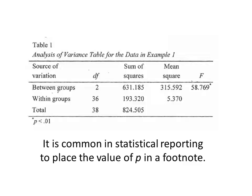The sum of squares and mean squares are intermediate values obtained in the calculation of F. If you divide the mean square of 315.592 by the mean square of 5.370, you will obtain the F value. For most people, the values of sum of squares and mean squares are of very little interest; the typical consumer is really interested in whether the null hypothesis has been rejected, which is shown through the p-value.